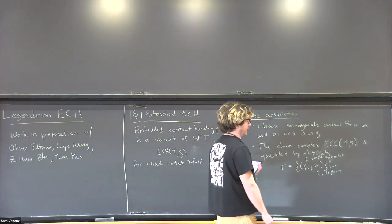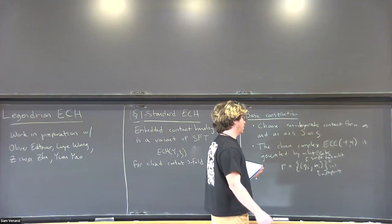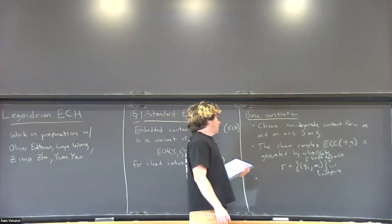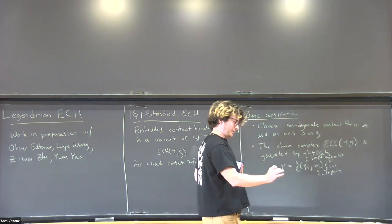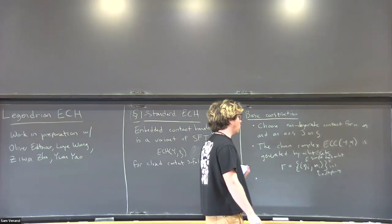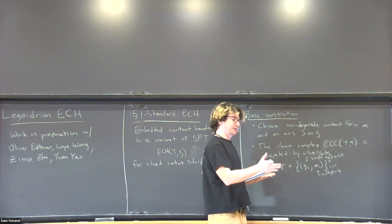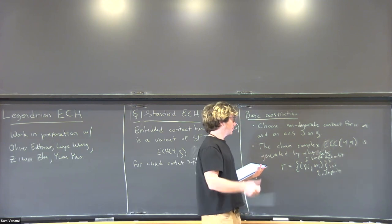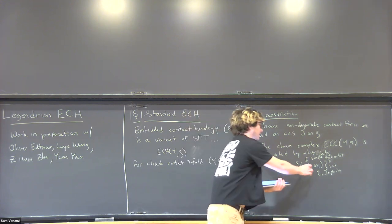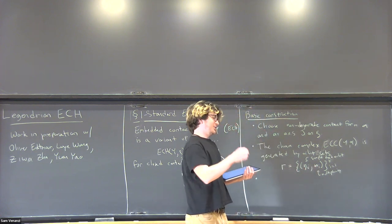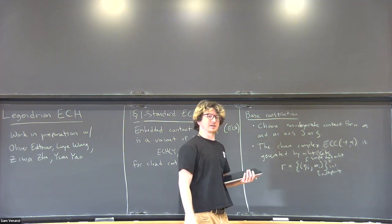One thing to note is that an orbit set is not the same thing as a tuple. If you were thinking about regular contact homology with the contact DGA, or symplectic field theory in general, the generators would be something like just orbits—simple orbits plus all of their covers—or monomials in those orbits satisfying some commutativity depending on the SFT grading. Here, orbit sets don't distinguish between two copies of the same simple orbit and a double cover of that orbit—those would both be the same orbit set.